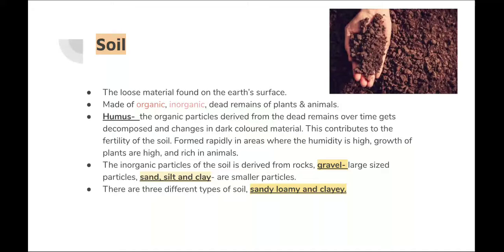Today I'm going to talk about soil. What is soil? Soil is the loosest material found on the Earth's surface. It is made of organic, inorganic, and dead remains of plants and animals. There are organic materials and inorganic materials. There is humus — humus is the organic particles derived from the dead remains that over time get decomposed and change into dark colored materials.